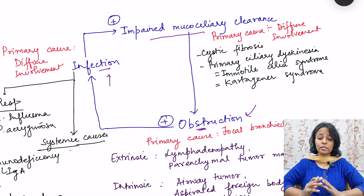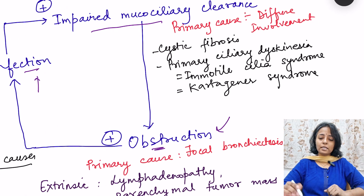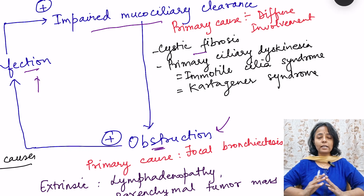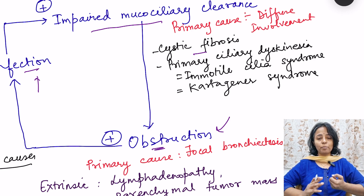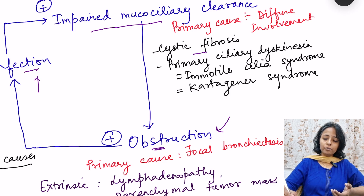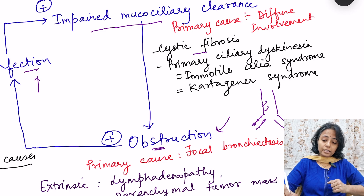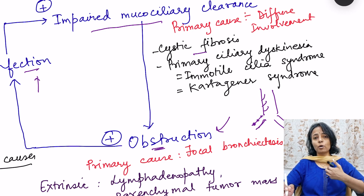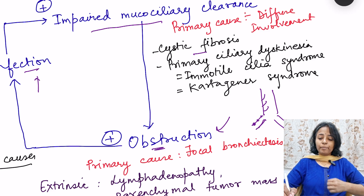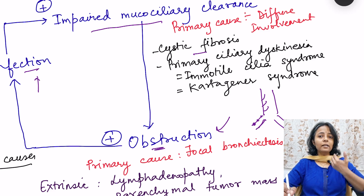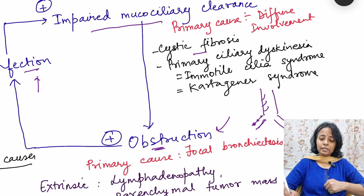Let us see what can be the causes with each of these as the primary cause. First is impaired mucociliary clearance. The primary causes can be cystic fibrosis and primary ciliary dyskinesia, also known as immotile cilia syndrome. In primary ciliary dyskinesia, cilia are not working properly, so they will not be able to clear the mucus. Goblet cells and mucus glands are continuously secreting mucus, and cilia normally move it upward toward the mouth, but if cilia are not working, mucus clearance will not take place, leading to mucus impaction.